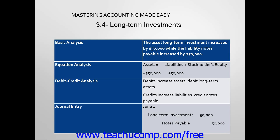Our basic analysis tells us that the asset long-term investment increased by $50,000, while the liability notes payable increased by $50,000. Since a liability account increased the same amount as an asset account increased, we know that the equation will balance.